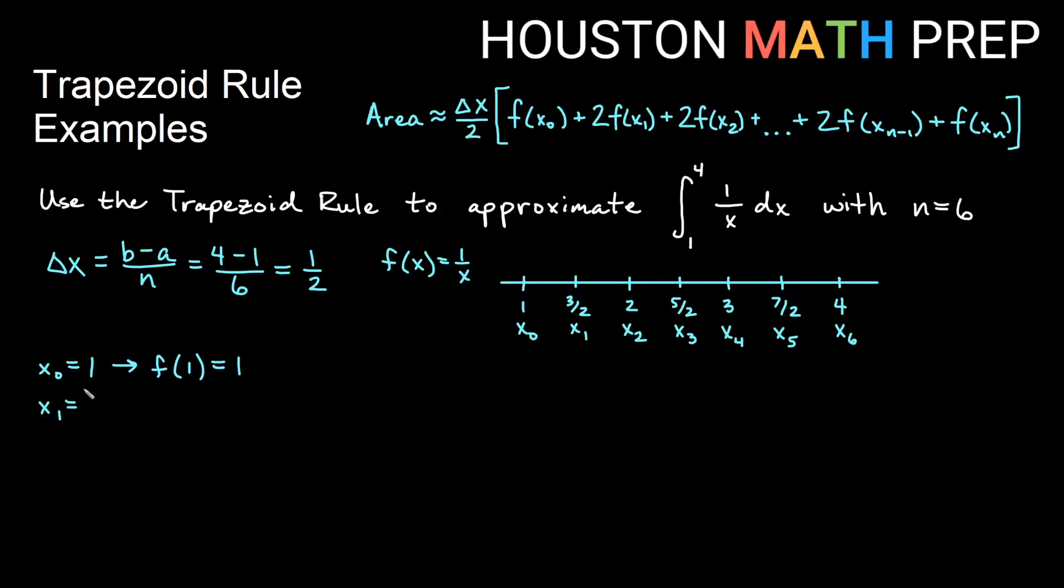x₁ is 3 halves. And so if I take the reciprocal of 3 halves, 1 over 3 halves, that would be 2 thirds. For my next x value, x₂, that's 2. And if I plug that in, so in other words, f of 2 would be 1 half.